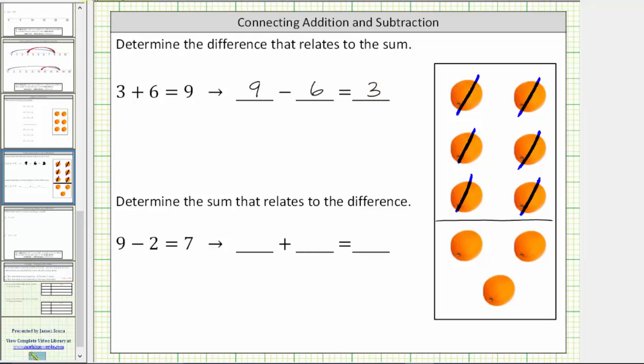One thing you might also notice is to go from the sum to the difference, we use the values in the sum in the opposite direction. Three plus six equals nine corresponds to the difference nine minus six equals three.